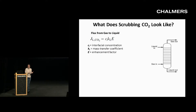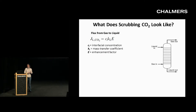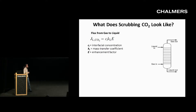The higher the flux, the better — you're able to process CO2 faster. The three components that dictate that flux are: CI, the concentration of CO2 at the interface of the gas and the liquid, dictated by Henry's Law — a thermodynamic quantity describing how much CO2 the solvent can hold; the mass transfer coefficient, dictated by the process itself, how the liquid coats the packing material, its density, viscosity, and the nature of the packing material.